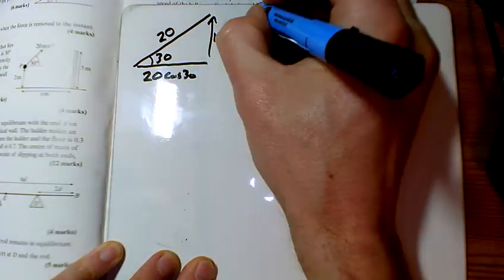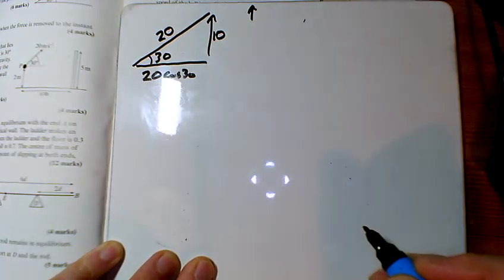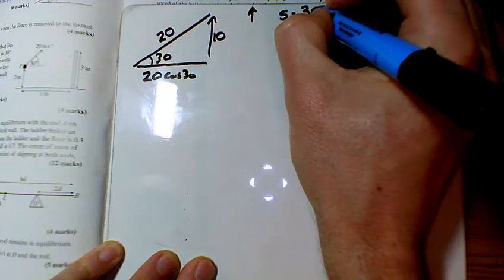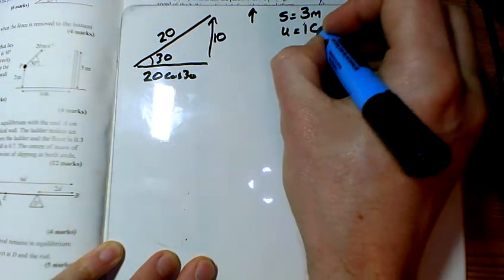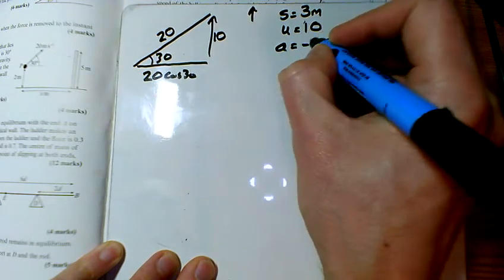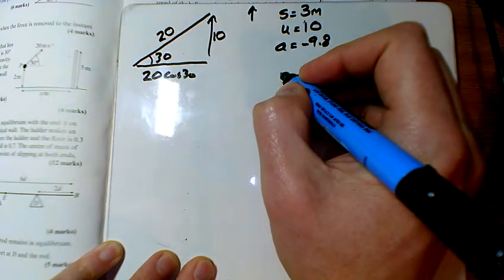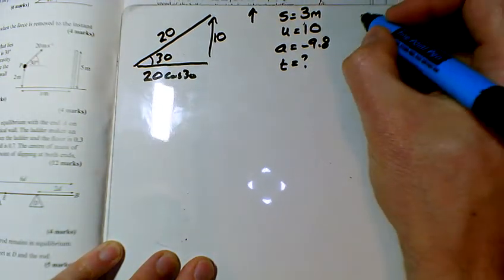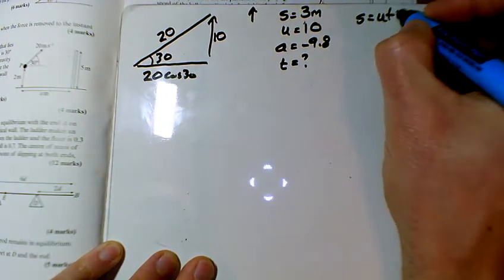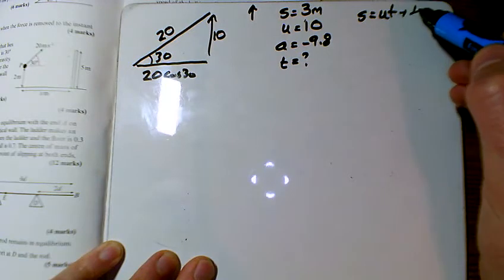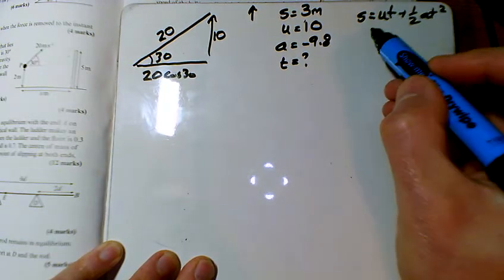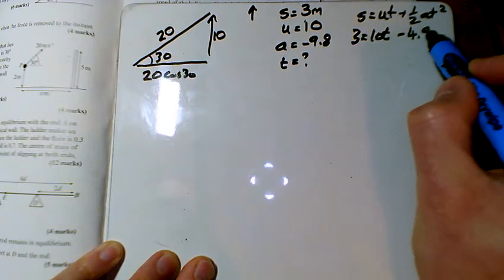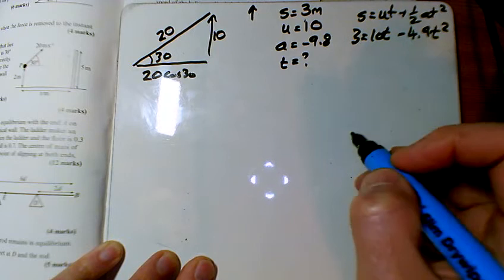We're looking at this vertically to begin with because we want it to go up 3 meters. We know initially it's 10, we've got an acceleration of minus 9.8, and so what we really want is to find out what t is. So let's use s equals u t plus half a t squared.